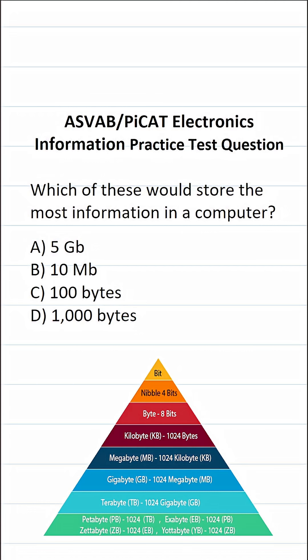This electronics information practice test question for the ASVAB and AFQT says: which of these would store the most information in a computer? We have 5 gigabytes, 10 megabytes, 100 bytes, and 1,000 bytes.